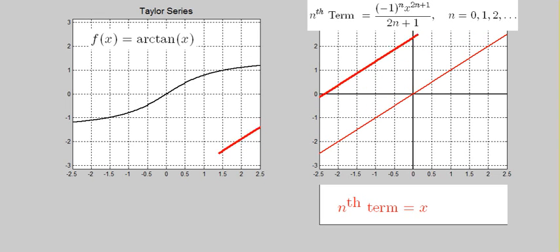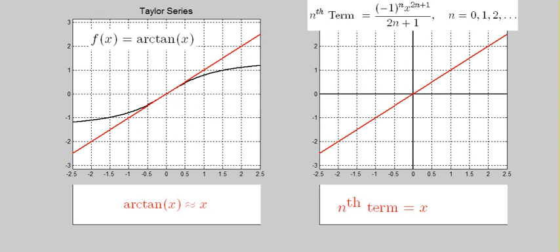The first non-zero term in the power series for the arctan function is the line y equals x, shown in red. This is the tangent line at x equals 0.